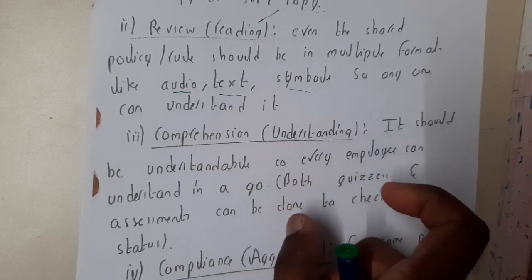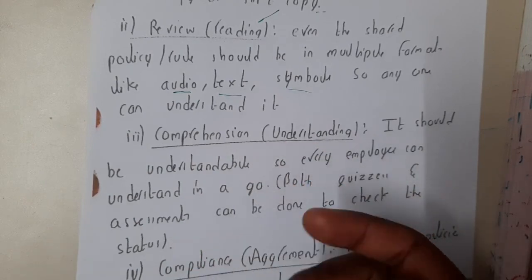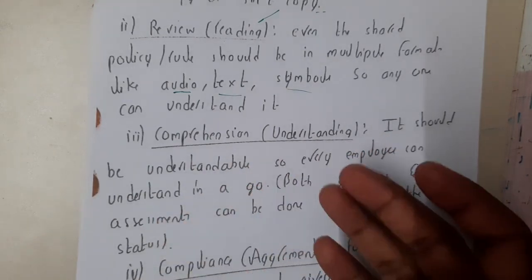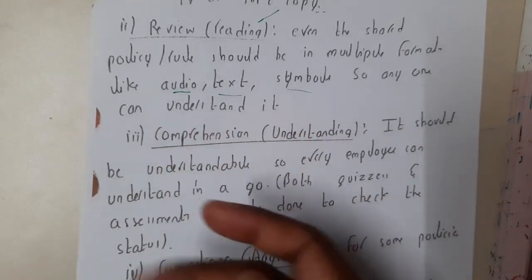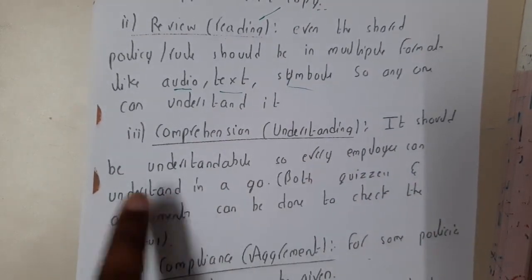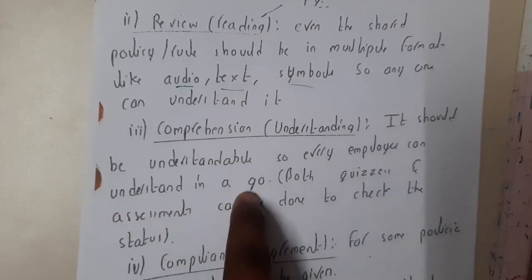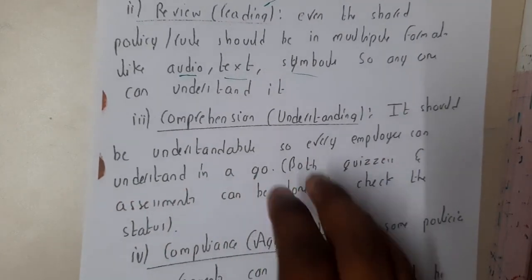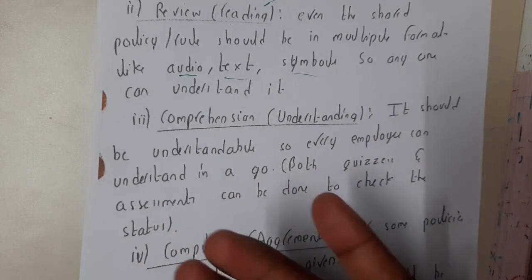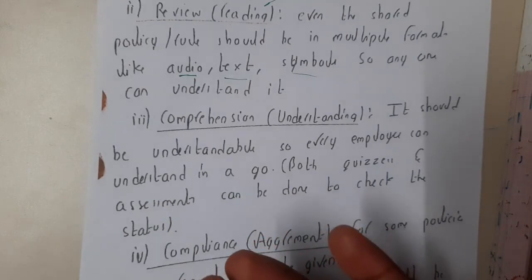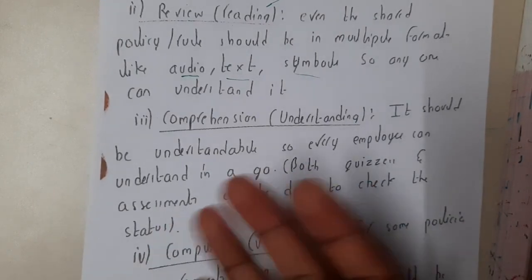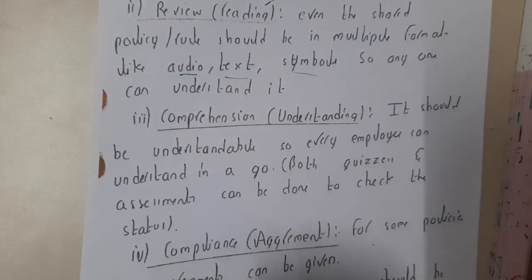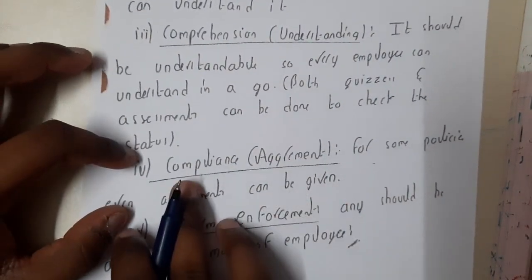The third criterion is comprehension, meaning the policy must be understandable. You should not use complex or unusual words in the rules and regulations. It should be written so simply that even a small child who understands the language can understand it. There should also be quizzes and assessments — just as faculty conduct exams to assess students' understanding — to verify that every employee has understood the policy.